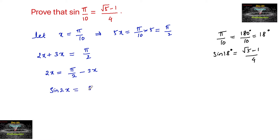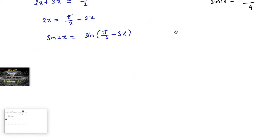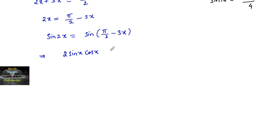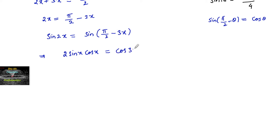So sin(2x) = sin(π/2 - 3x). Now the formula for sin(2x) is 2 sin x cos x, and sin(π/2 - θ) = cos θ, so the right side becomes cos(3x). We also know the cos(3a) formula.